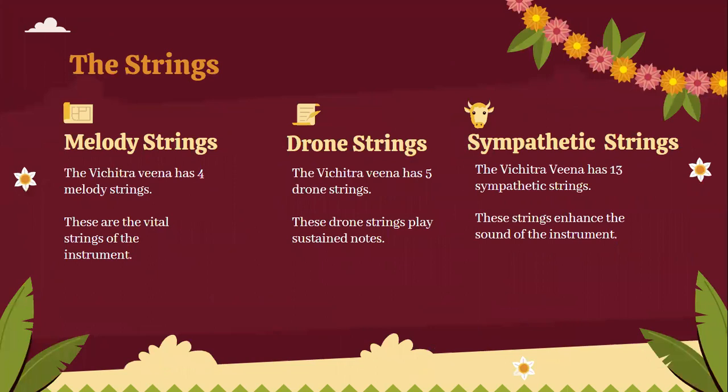The Vichitra Veena has four melody strings, which are the vital strings of the instrument. It also has five drone strings, which play sustained notes. Additionally, the Vichitra Veena has 13 sympathetic strings, which enhance the sound of the instrument.